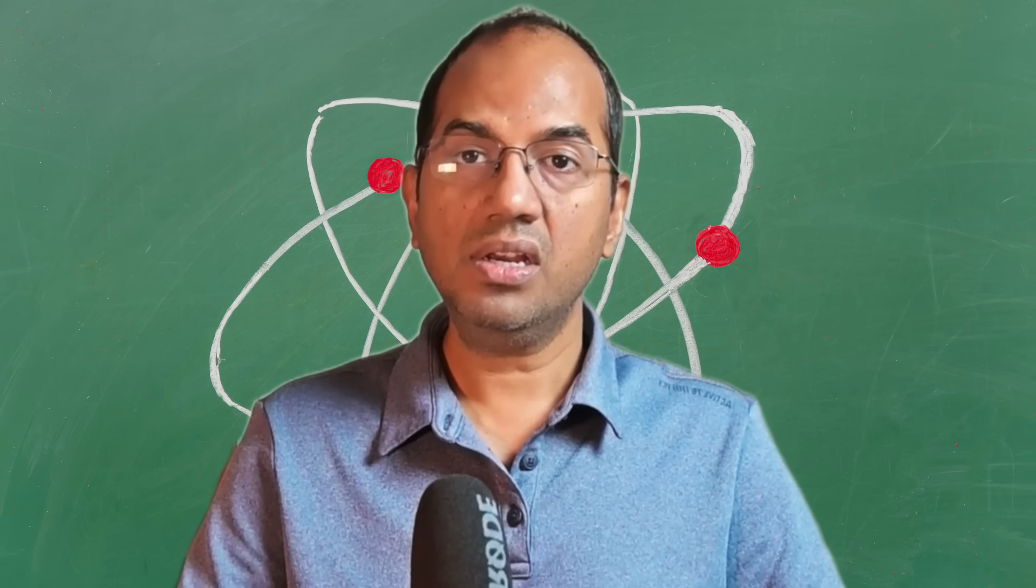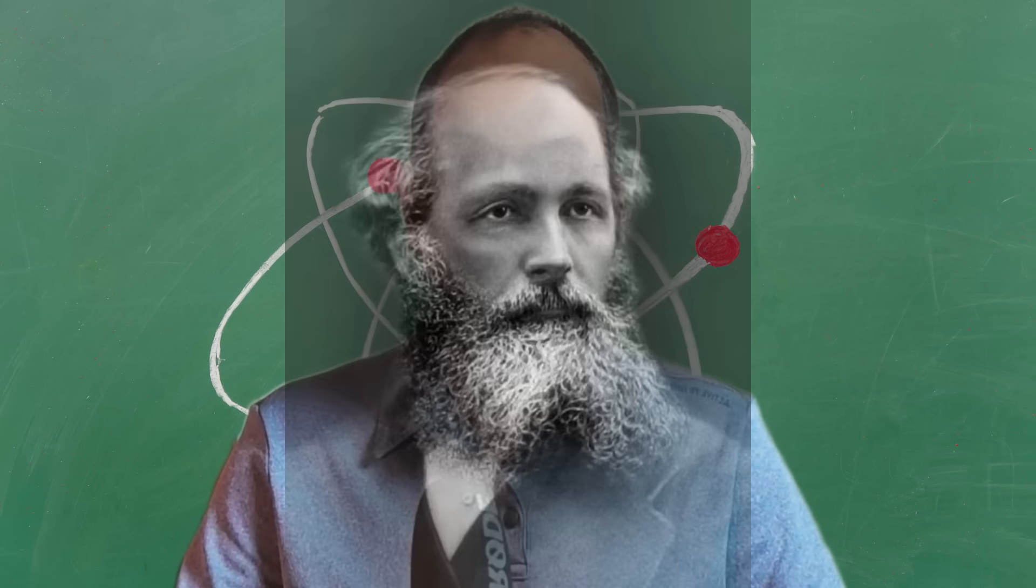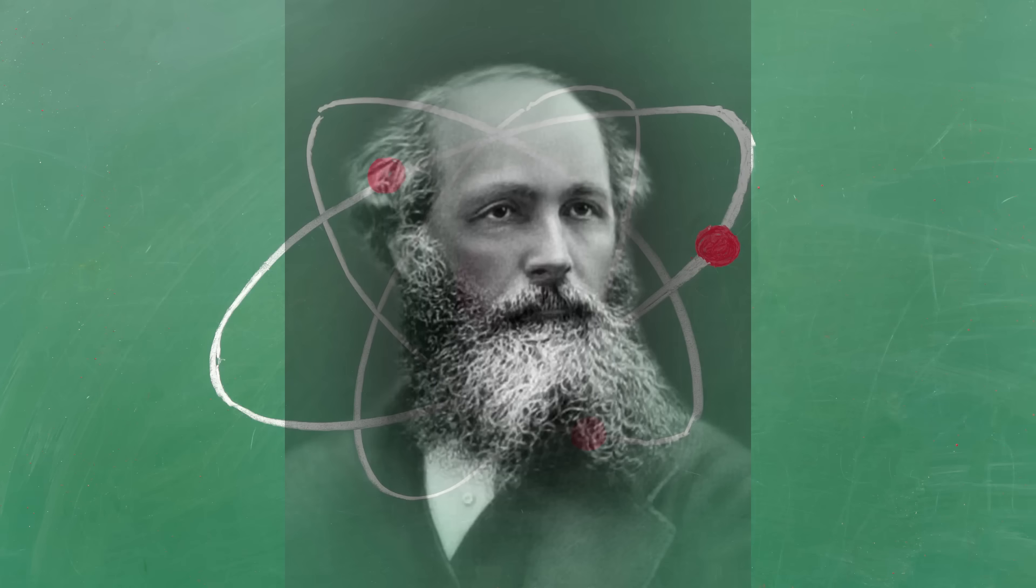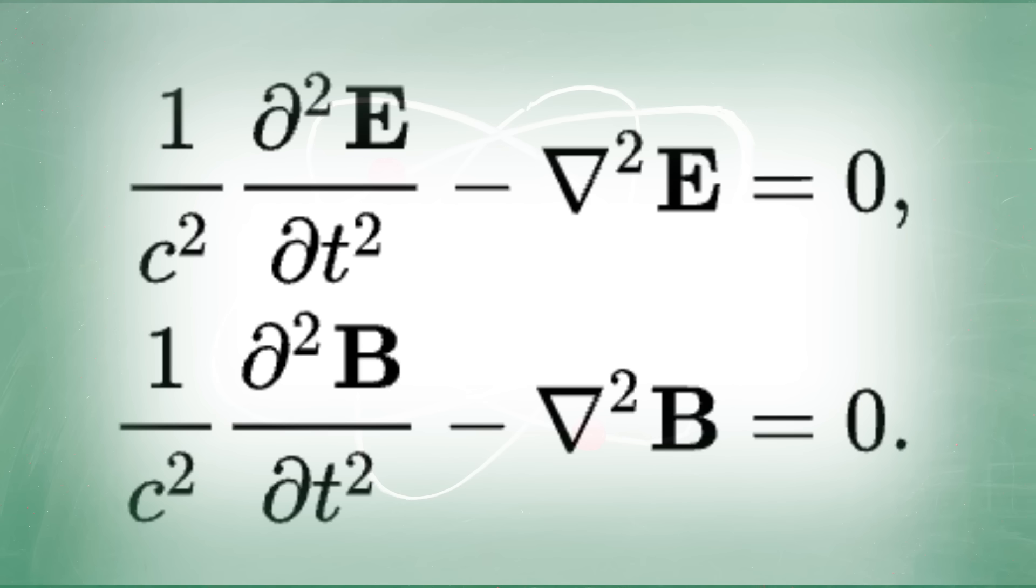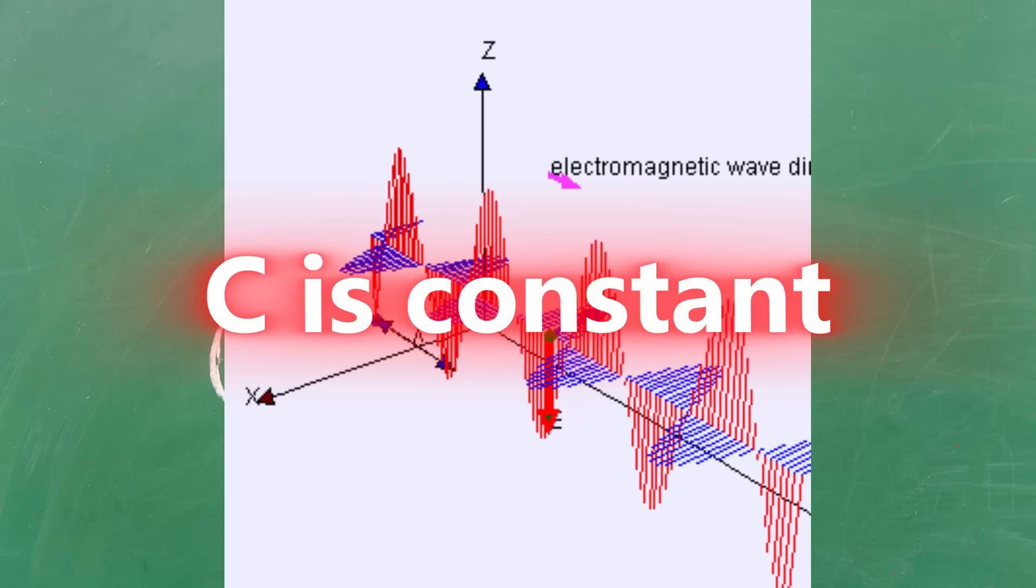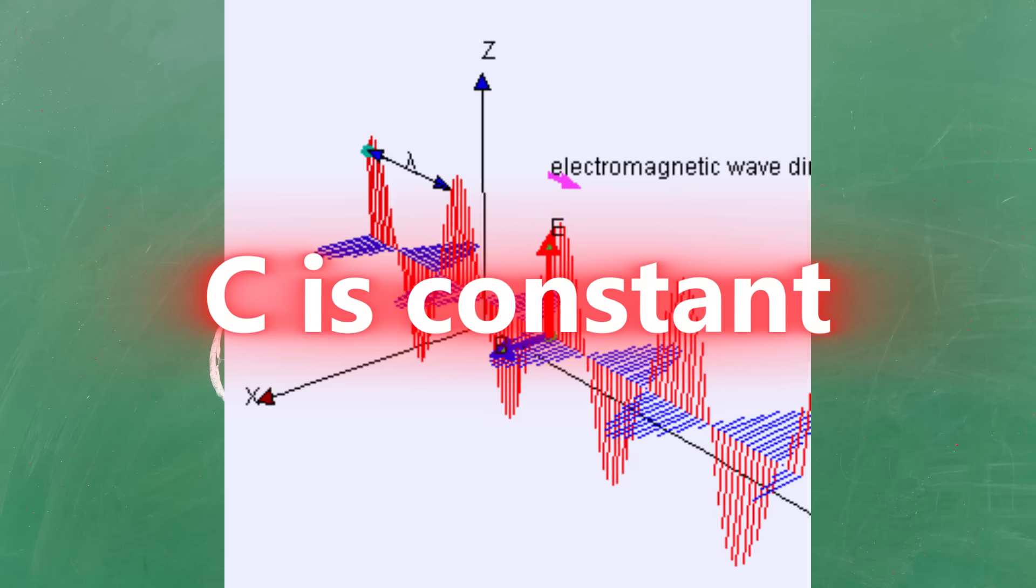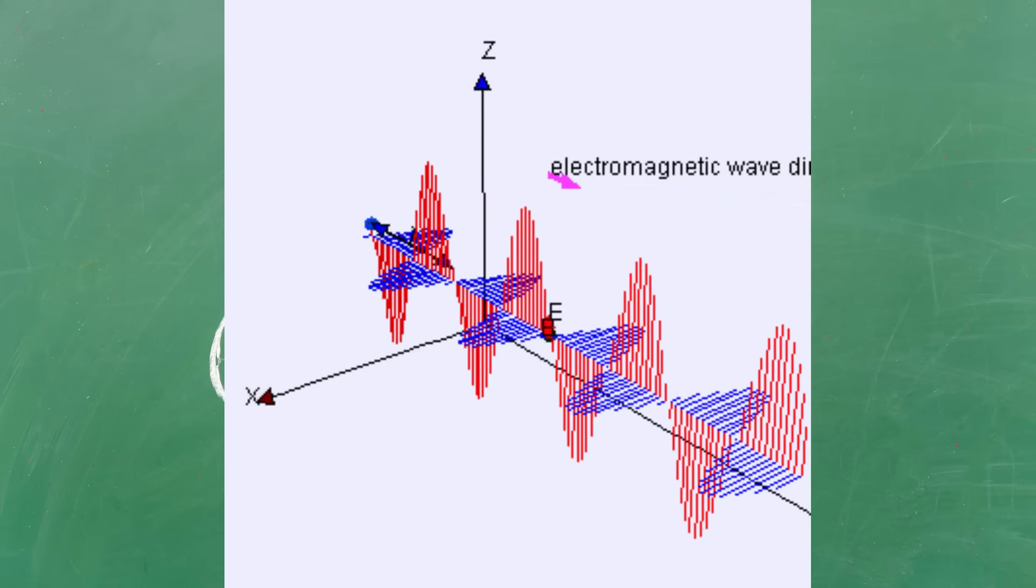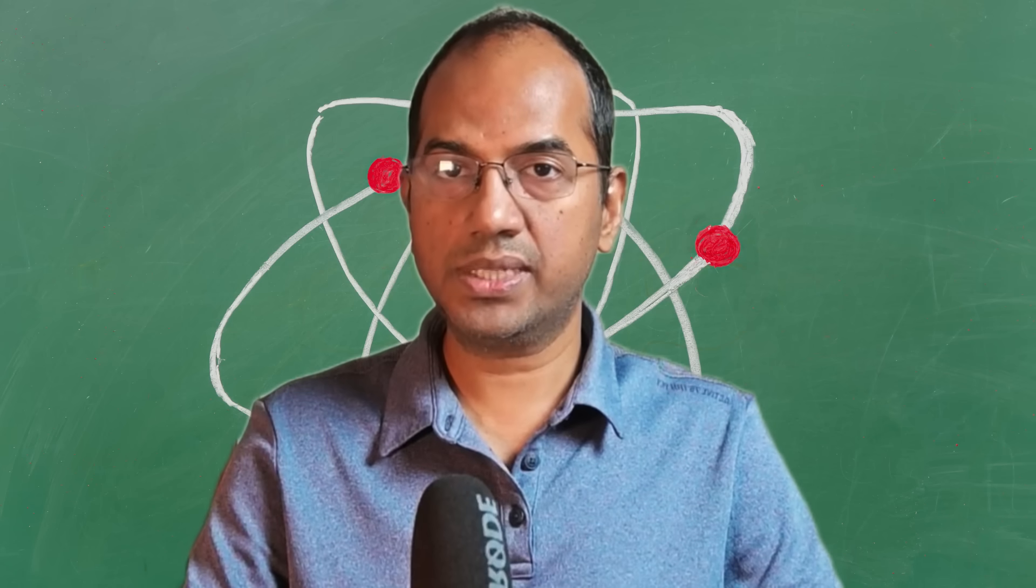In the late 19th century, physicists were grappling with Maxwell's brilliant new theory of electromagnetism. Buried in his equations was a startling prediction: the speed of light in a vacuum was a constant. It doesn't matter how fast the source of light is moving or how fast you are. It's always the same number, about 299,792 km per second.